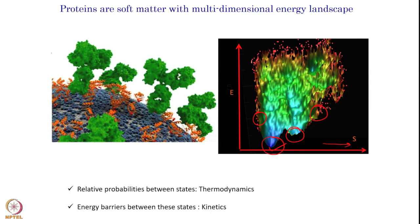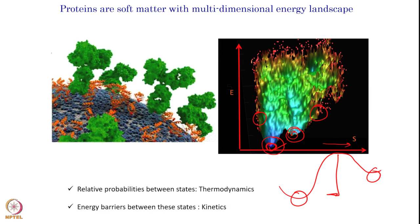If we can probe the relative probability of these excited states — not at the ground state but slightly above it — then we can understand the thermodynamics happening between the two states. What is the probability that the protein exists at the bottom? What is the probability it is slightly up? That is given by thermodynamics. And what are the energy barriers between these two states? How the protein crosses from one state to another is dictated by the kinetics. By understanding protein dynamics and how it samples various states in the folding funnel, one can understand both the thermodynamics and kinetics parameters of protein conformational transitions.